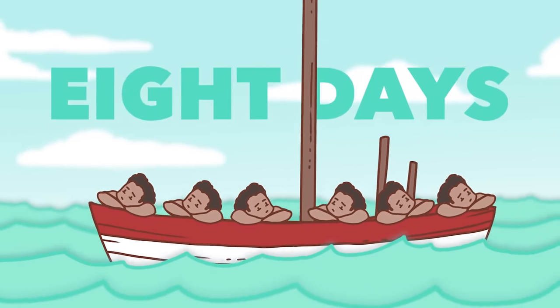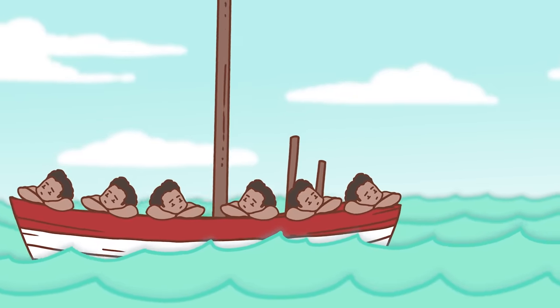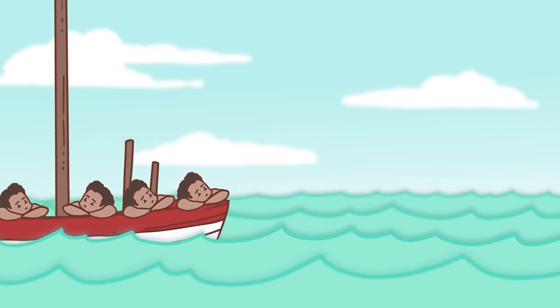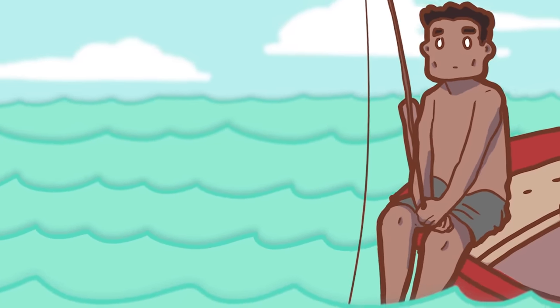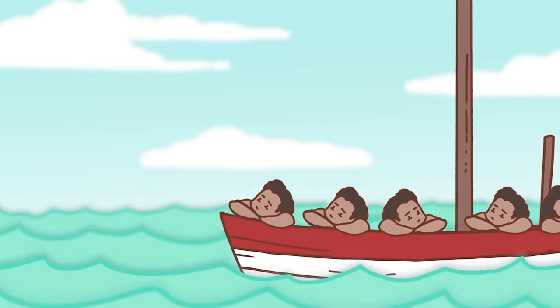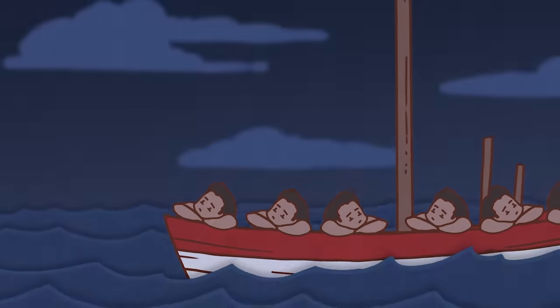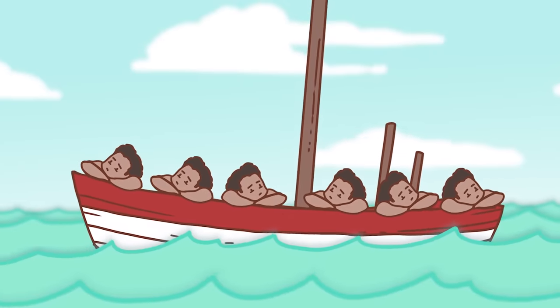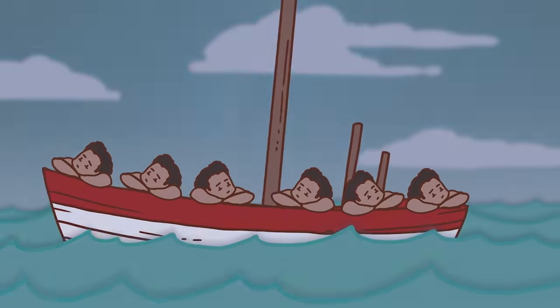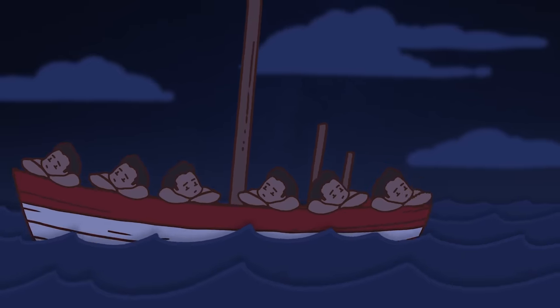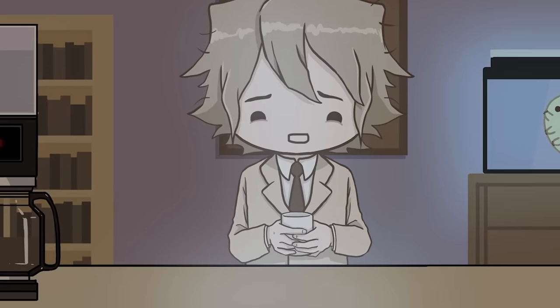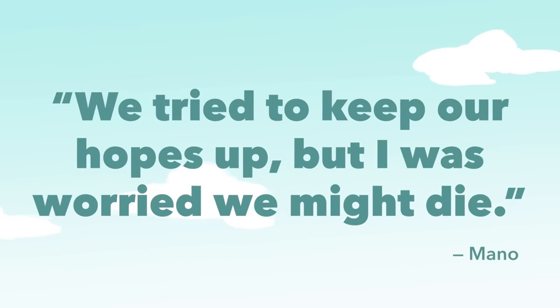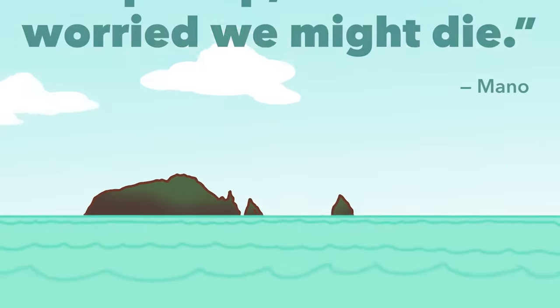Eight days, they drifted at sea. With no sign of land, and no food or water, things looked dire for the six lads. First, they tried to catch fish, but to no avail. Prudently, they used the coconuts they brought with them, and tins they found on board to catch rainwater, and rationed it strictly, giving each boy exactly one sip of water in the morning, and another sip in the evening. Some of the boys began to cry, but there was nothing they could do. In Mano's words, we tried to keep our hopes up, but I was worried we might die.